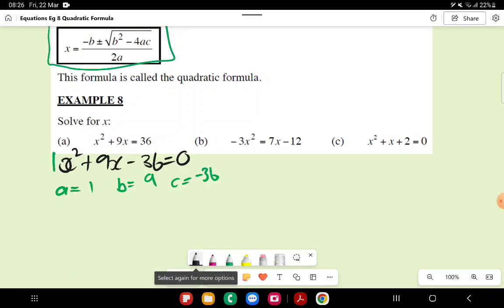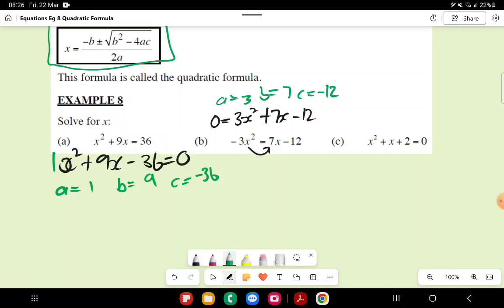That is my first equation. I'm going to do the same with the second and the third. So my second one, if I write it as a trinomial, I'm going to take this negative to the other side. So I'm going to say 0 equals 3x squared plus 7x minus 12. And based on that, a is equal to 3, b is equal to 7, and c is equal to negative 12. And in my third one, I already have it in the correct formula. So a is 1, b is 1, and c is 2.